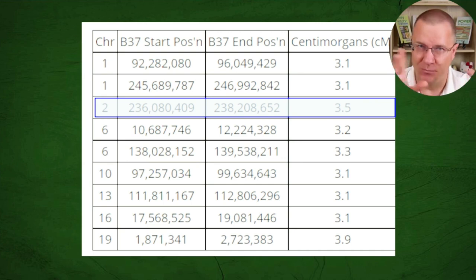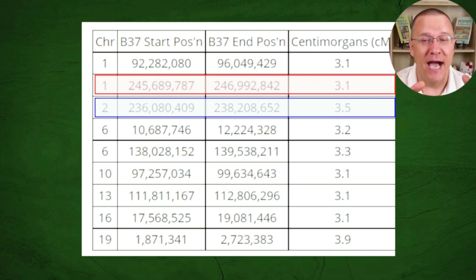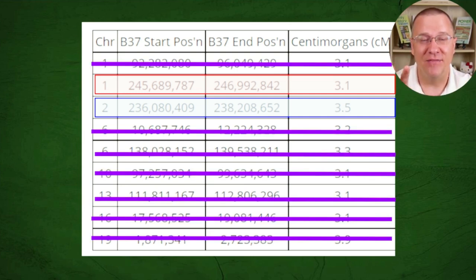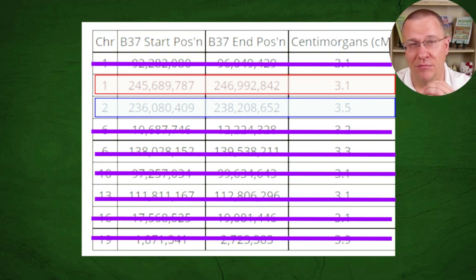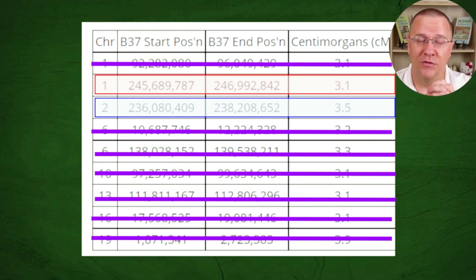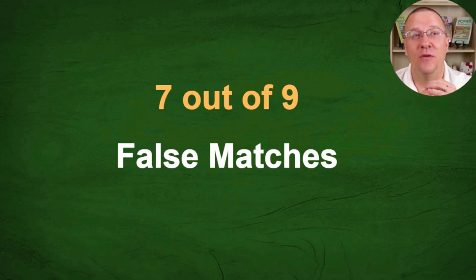So the rest must match my mom, right? No! Only one other segment matches my mom. So already I can eliminate 7 segments. I can say right off the bat, all 7 of those segments shown in purple are false. 7 out of 9 is roughly 77% — the vast majority of those segments are false, and I know that just by comparing with my dad and my mom.